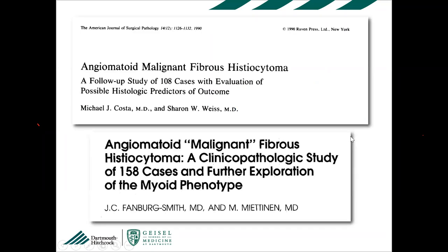Angiomatoid fibrous histiocytoma was first described by Dr. Enzinger — the mentor of Sharon Weiss, who was my mentor — back in 1979. It was originally called 'malignant angiomatoid fibrous histiocytoma' because it seemed aggressive, but subsequent studies showed it didn't behave that malignantly, and it was renamed angiomatoid fibrous histiocytoma. It is officially classified as a tumor of intermediate malignancy.